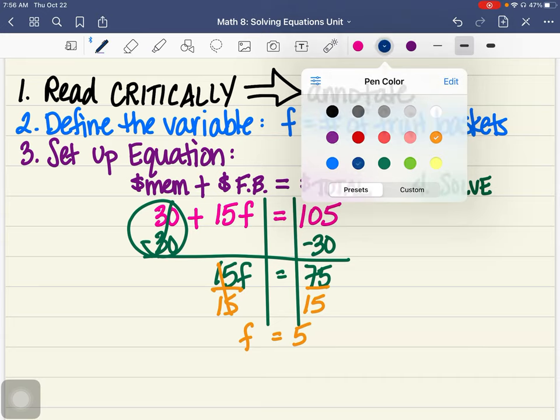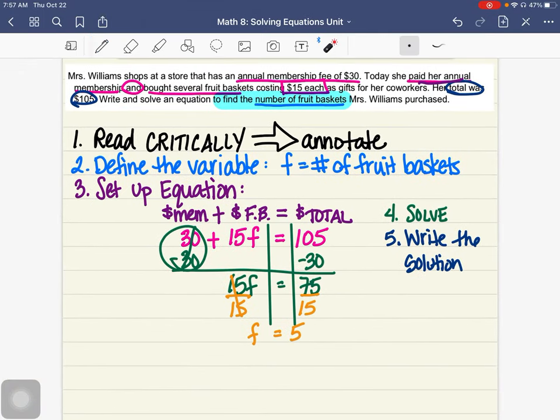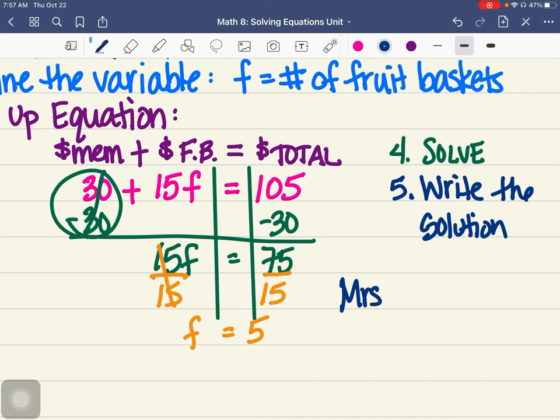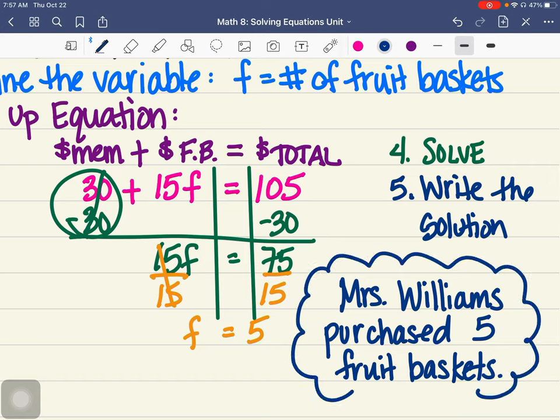We're not quite done yet. I mean, we're done solving stuff, but we still have to write the answer out, write the solution out. So what does 5 mean? 5 is more than just a number now. It represents something in the whole problem. That's why we go back to this second part, defining the variable. F is the number of fruit baskets. So I would write down for my final answer, Mrs. Williams purchased five fruit baskets.